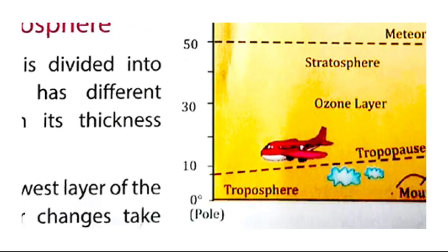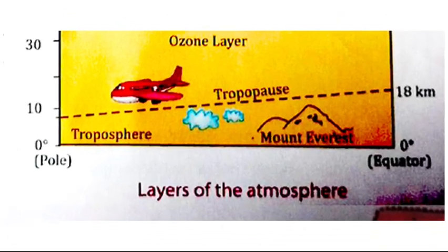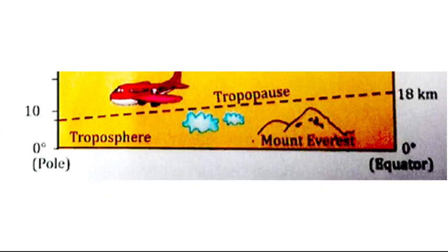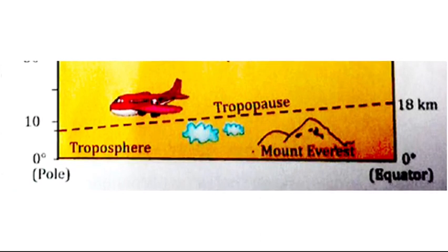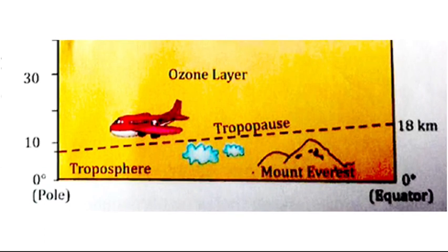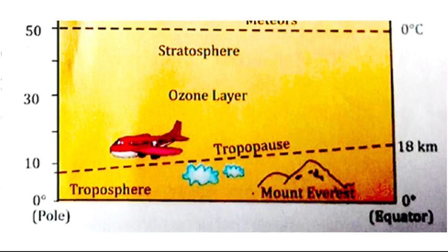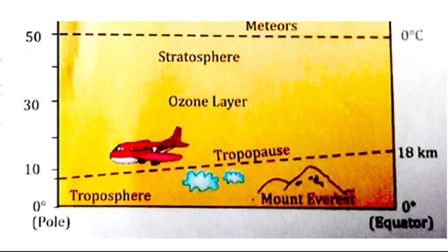The first layer is the troposphere, which is the lowest layer of the atmosphere. Weather changes take place in the troposphere. The next layer is the stratosphere, which is just above the troposphere.